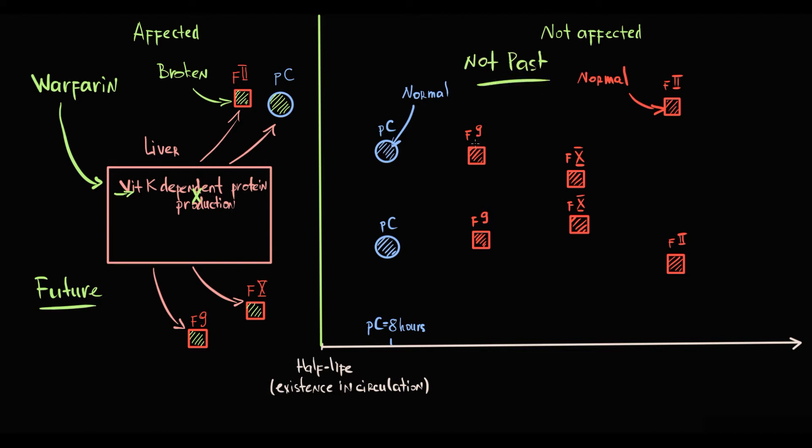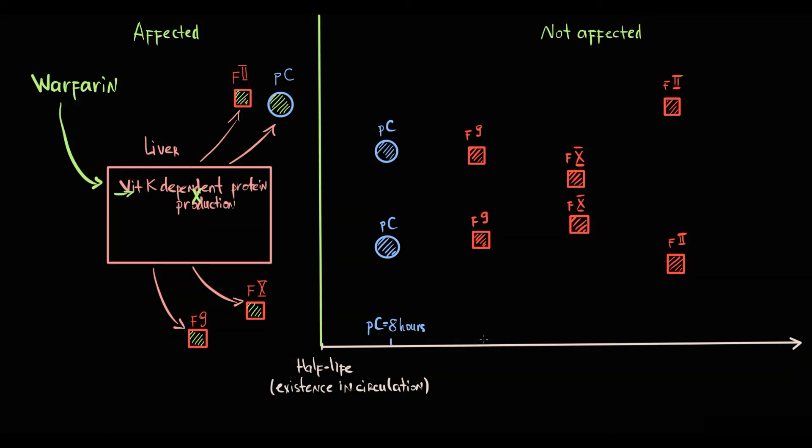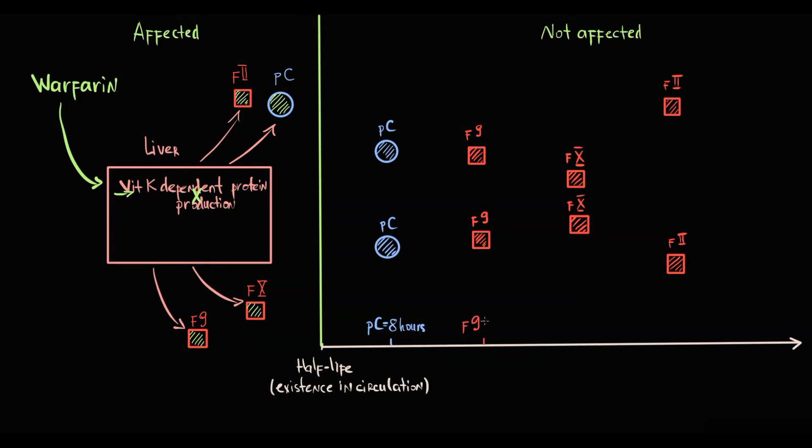So let's take protein C, which is the major anticoagulant protein, and three major procoagulant proteins: factor 9, 10, and 2. The half-life of protein C is 8 hours. In contrast to this, the period of life of coagulative factors is much longer. Factor 9: 24 hours. Factor 10: 46 hours. Factor 2: 60 hours.